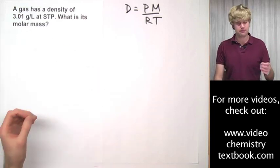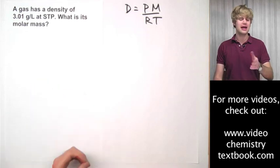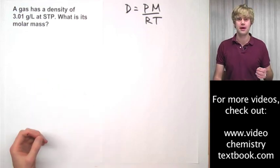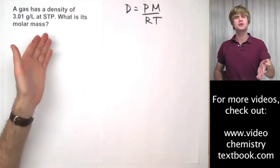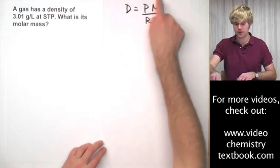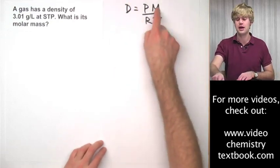So here's our second problem. A gas has a density of 3.01 grams per liter at STP. What is its molar mass? So first of all, since we're using density, we're going to want to use this form of the ideal gas law that has density and molar mass in it.